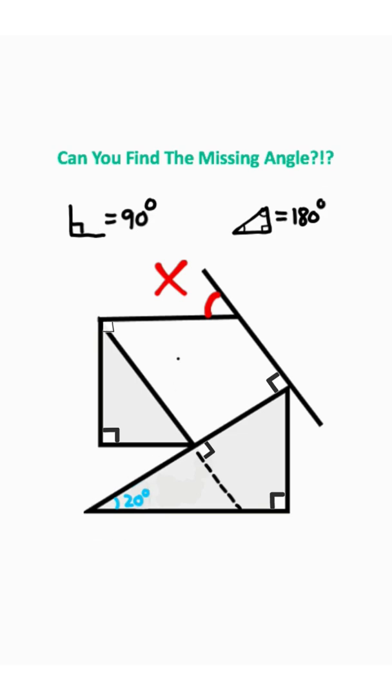We're starting with a 20 degree angle, and we're trying to find this X. I'm gonna drop down a dotted line. Notice that we have a cusp, meaning this will be a 90 degree angle. To get this entire triangle to add to 180, this must be a 70 degree angle, because 70 plus 20 plus 90 will give you 180.